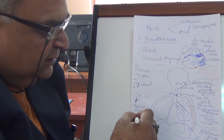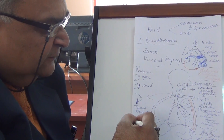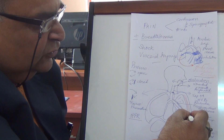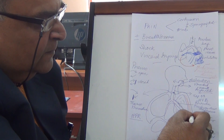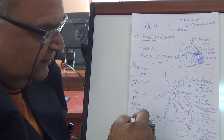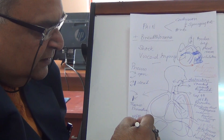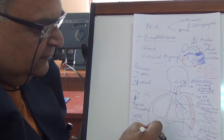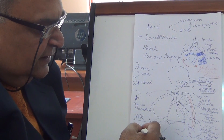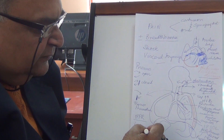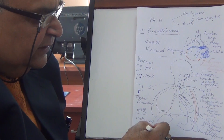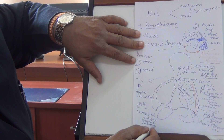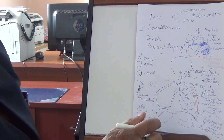Treatment involves intermittent positive pressure respiration to prevent lung collapse, and draining the pleural cavity by intercostal drainage - a negative pressure drainage - to maintain negative pressure in the pleural cavity.